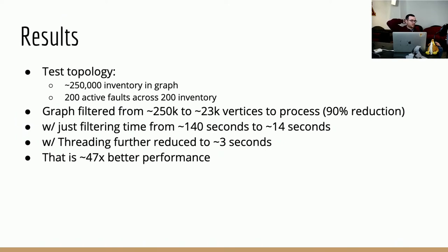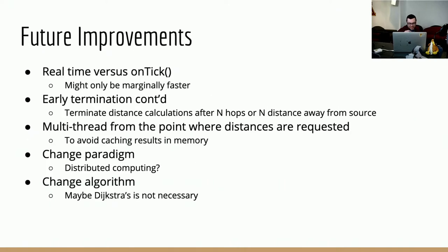A question was raised about whether we could cache this correlation and only re-run it when the topology changes rather than on every tick. That's actually something I was thinking about too. Rather than filtering the graph and computing distances on every tick, maybe there's a way to do it in real time as the graph changes. However, I'm not sure how feasible that is, because technically you have to recompute everything as soon as new inventory or new links come in since that might now be the shortest path for many vertices, which could affect a lot of nodes.